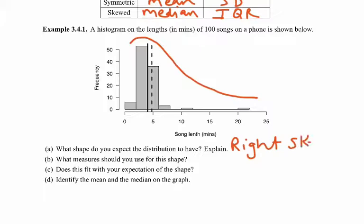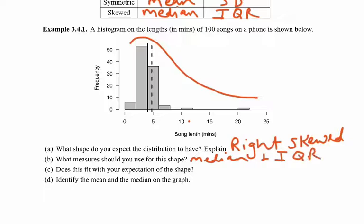Even if you hadn't looked at the data, if you think about it, all of the songs you pull are going to be around a certain length, and then drop off. The number of songs that are 10 or 20 minutes long is very small — most songs fall within a certain range and then tail off, giving us a right-skewed distribution. Because it's right-skewed, we're going to use the median and the IQR to describe this distribution.